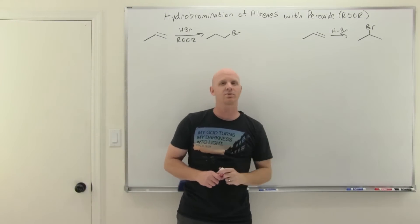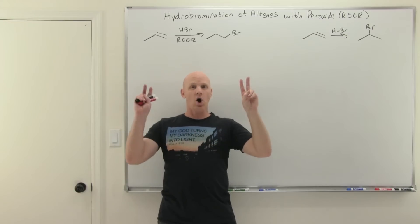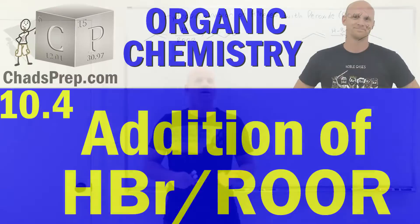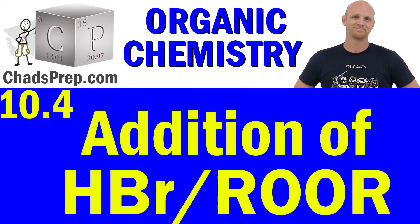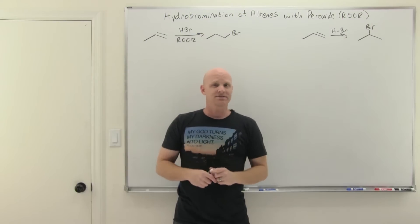Hydrobromination of alkenes with peroxide — the addition of HBr and ROOR — that's going to be the topic of this lesson.